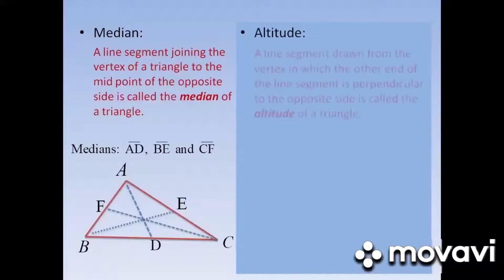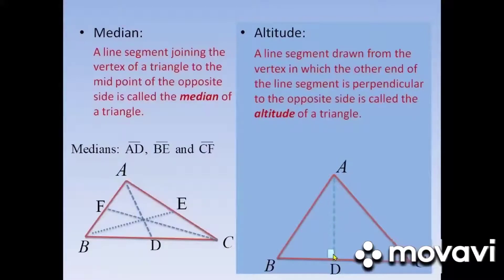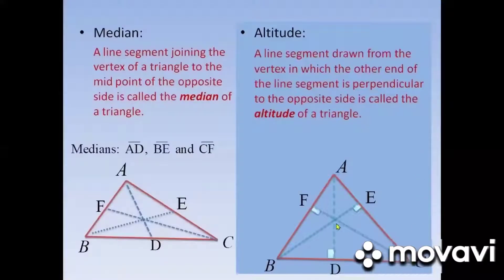Altitude — a line segment drawn from the vertex in which the other end of the line segment is perpendicular to the opposite side is called the altitude of a triangle. In triangle ABC, AD is a line segment joining the vertex A to the opposite side BC, and AD is perpendicular to BC. BE is a line segment joining the opposite side AC, in which BE is perpendicular to AC. CF is also a line segment joining the opposite side AB, in which CF is perpendicular to AB.